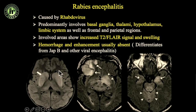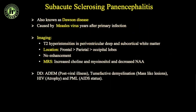Rabies is now extremely uncommon. It is caused by a rhabdovirus. Typically you get involvement of the basal ganglia, thalamus, and hypothalamus initially, and then eventually when the patient is about to die you get involvement of the brainstem.